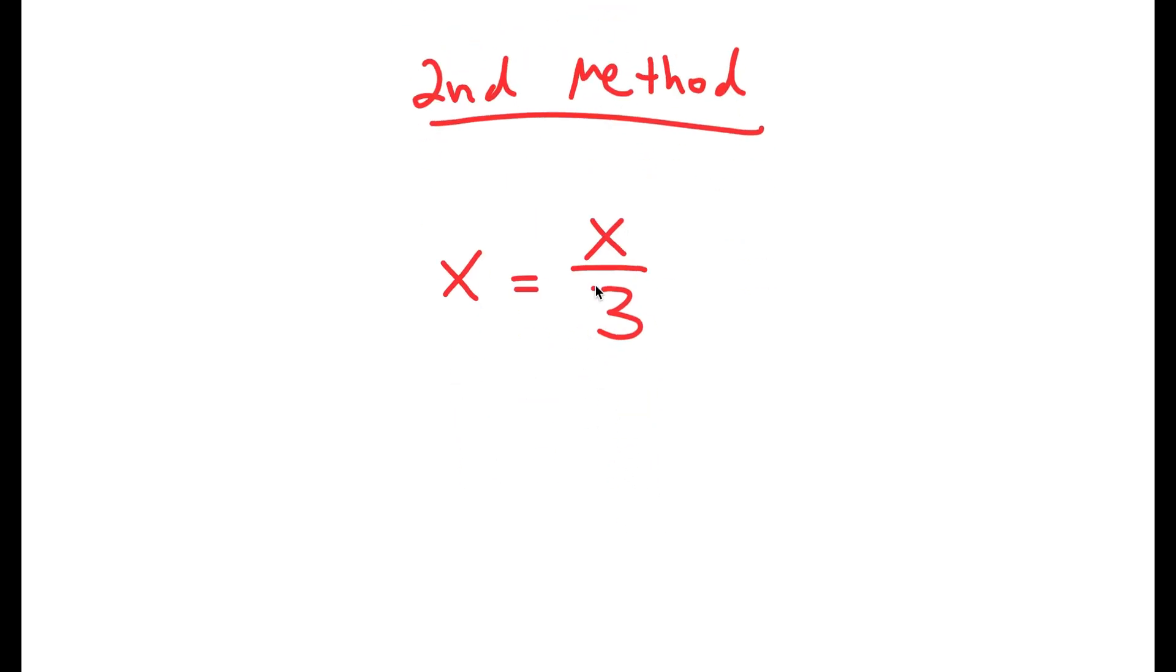And this time, instead of subtracting x over 3 on both sides, I'm actually just going to start with multiplying 3 on both sides. So then these two automatically cancel out, and I get 3x is equal to x.